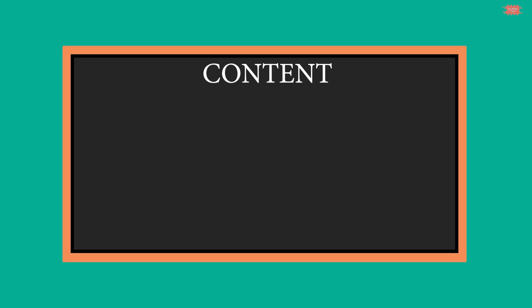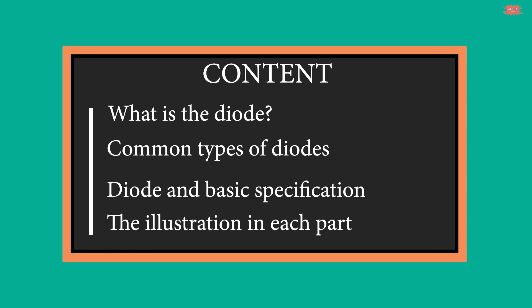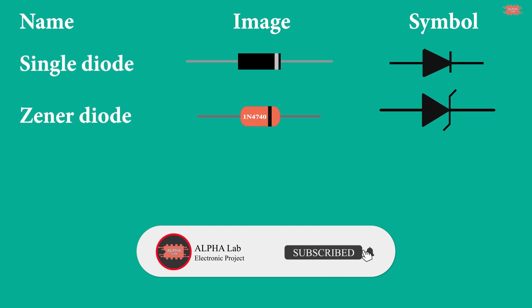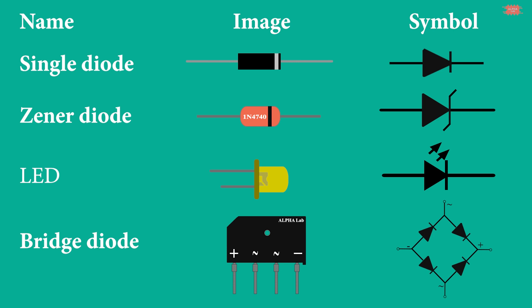In this video I'm going to introduce diodes, common types of diodes and their specifications. In each part I try to make an experiment to help the viewer understand the contents of the video. The diode is a semiconductor device that allows current to flow in only one direction. The diode has many types such as single diode, zener diode, light emitting diode or LED, and bridge diode. We will learn these diodes in turn.